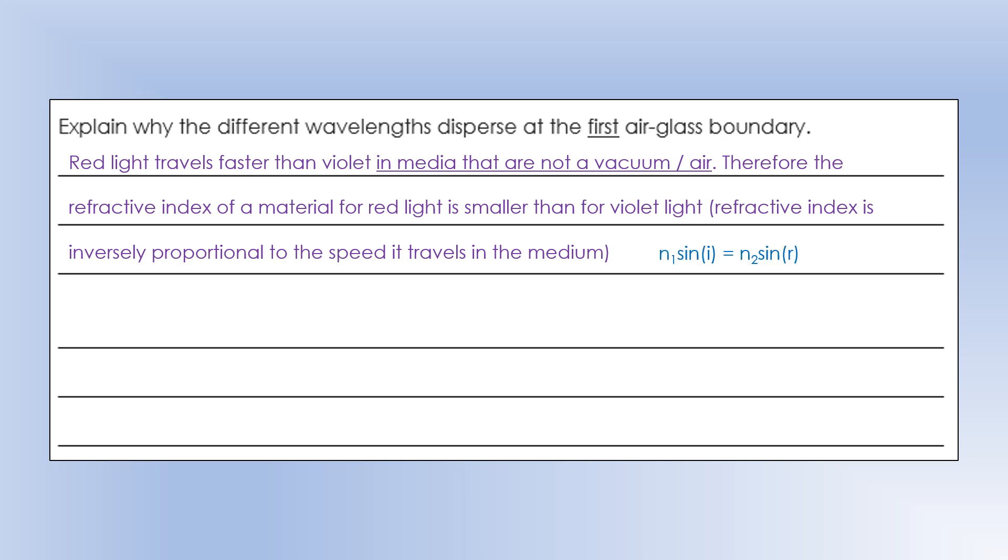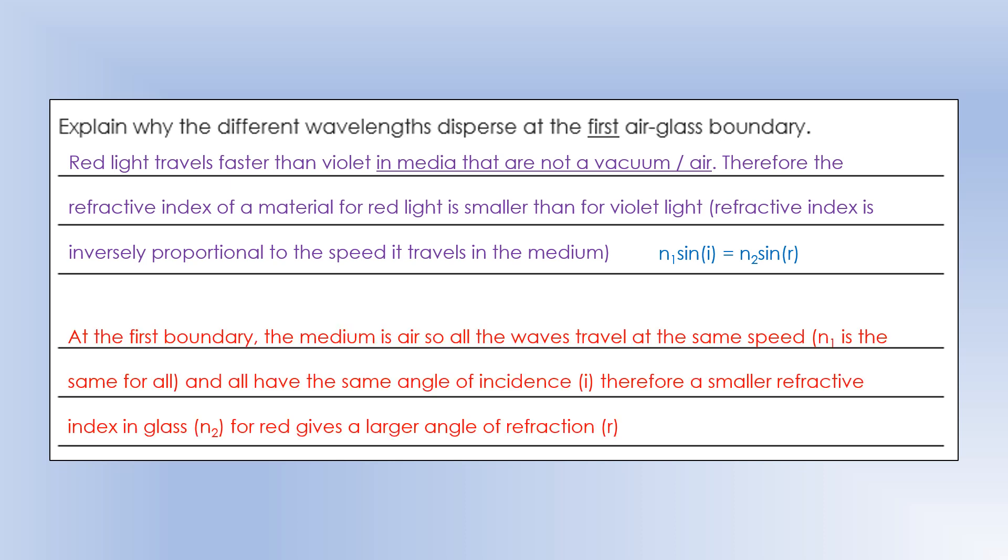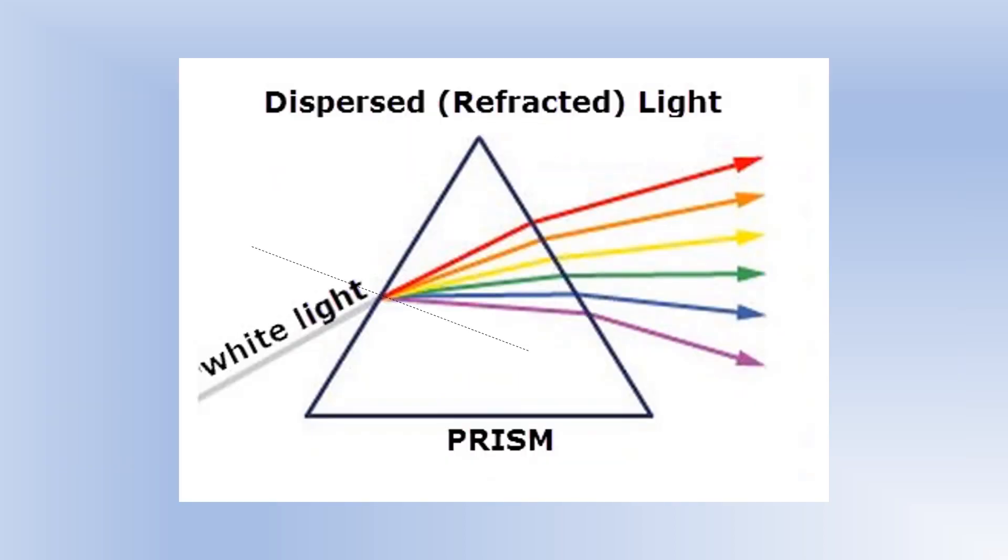The next thing is actually thinking about the law we're going to use, Snell's law. So N1 sine I equals N2 sine R. So let's actually think about the first boundary. At the first boundary, the medium is air. So all the waves travel at the same speed, which means N1 is the same for red, violet, green, whatever you like. And they all have the same angle of incidence, because they're all travelling in one beam of white light. So they all hit the boundary at the same angle. So that means N1 sine I is the same for all of the different wavelengths at the first boundary. So if red has a smaller refractive index, that's going to give it a larger angle of refraction. So if N2 gets smaller, sine R has to get bigger. So you can see I've drawn a normal in here, and you can see red light does indeed have a larger angle of refraction than the violet light, which has the smallest angle of refraction. And that's why we get this dispersion of light.